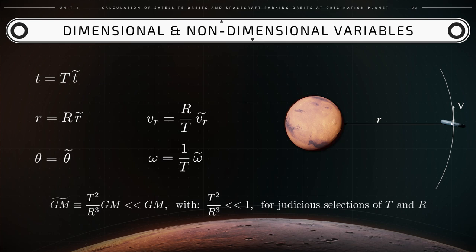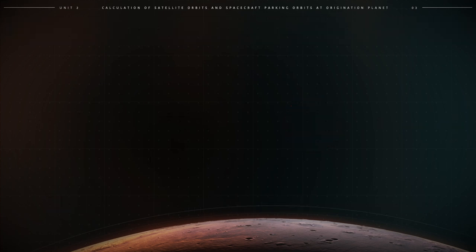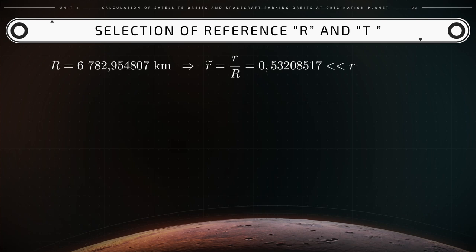gm̃ can be made much smaller than the dimensional GM through a careful selection of the reference time T and the reference length R, so that the ratio T² over R³ becomes much smaller than 1. The reference length capital R may be chosen to equal the initial condition for the dimensional distance r in the motion of the craft around Earth — not Mars — because that is a useful reference. In this case capital R equals 6,782.95 km, and as a consequence r̃, the non-dimensional distance between the centre of Mars and the centre of the spacecraft, will be equal to 0.532 units, which is much smaller than the dimensional r.